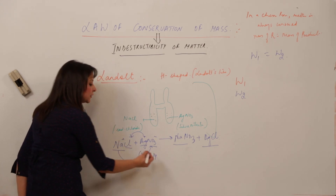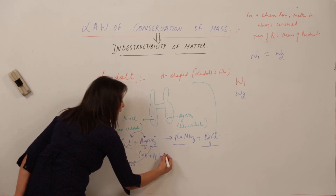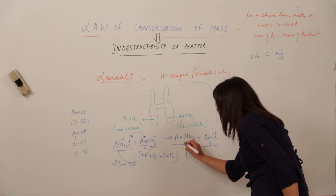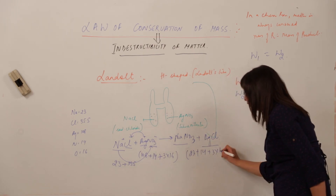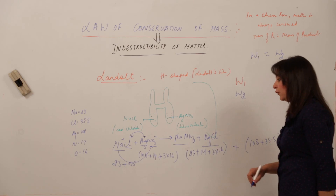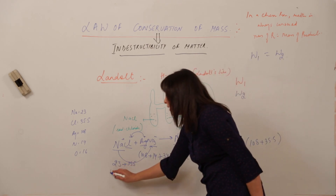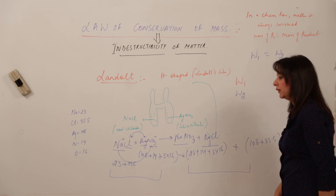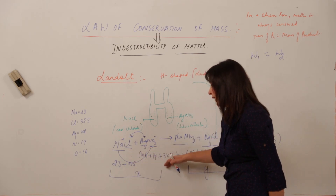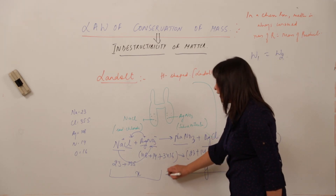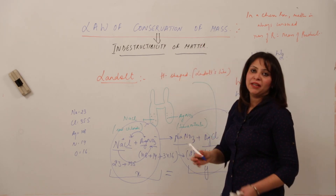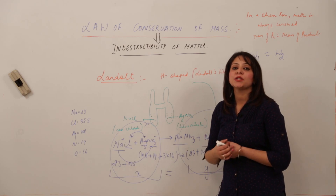Similarly, for the products: NaNO₃ has mass = 23 + 14 + (3 × 16); AgCl has mass = 108 + 35.5. When you add the total mass of the reactants and compare it with the total mass of the products, you find the values are exactly the same. If the reactant total is x and the product total is y, then x = y. This confirms that mass of reactants is always equal to mass of products — mass can neither be created nor destroyed in any chemical reaction. It is always conserved.